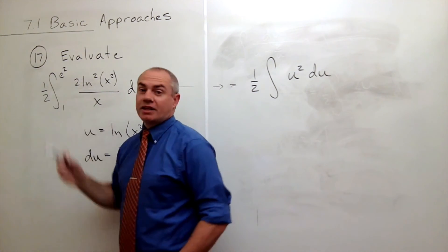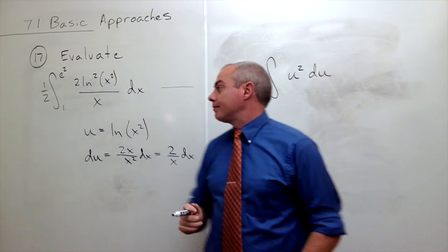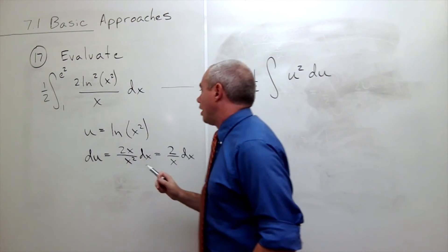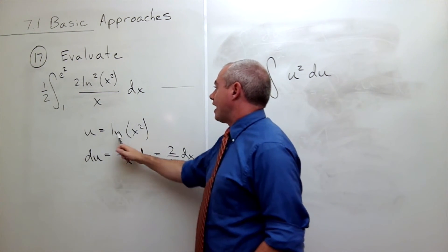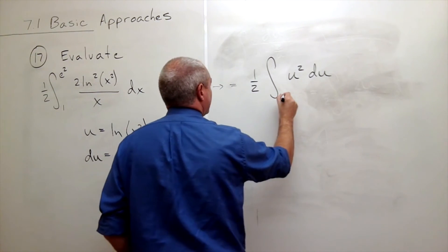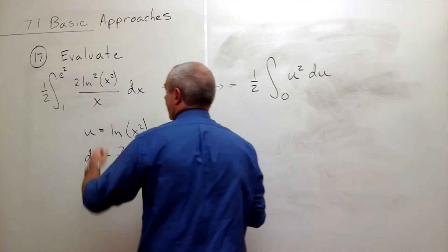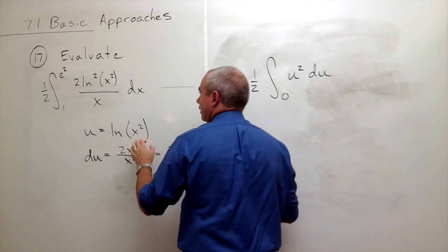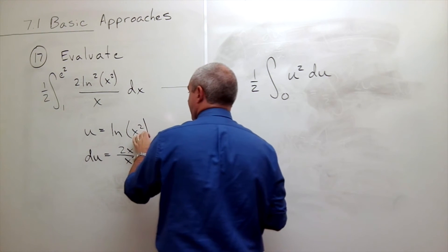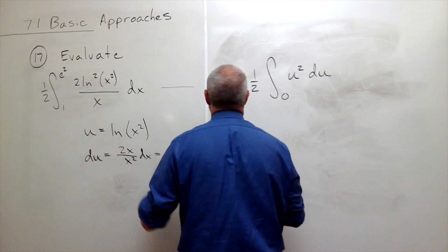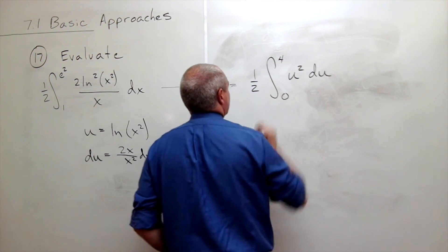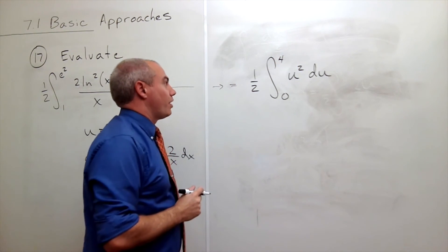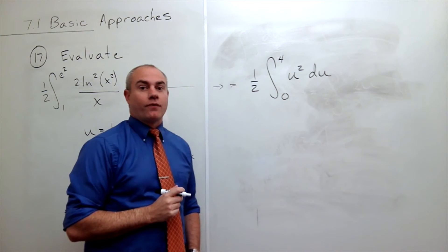But now I can change my limits of integration. So I'll plug in the 1. If I plug in 1, I get ln of 1, which is 0. And then I can plug in e squared. e squared squared is e to the fourth. And ln of e to the fourth is 4. So now I'm integrating from 0 to 4.